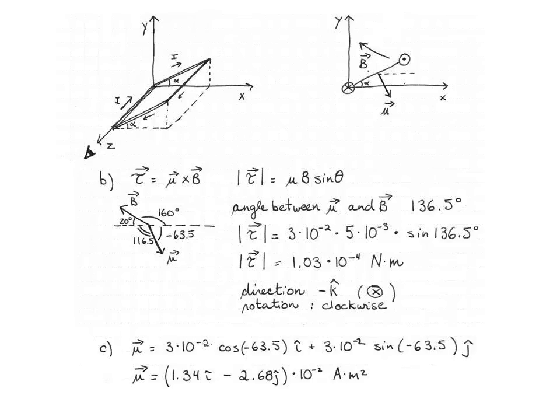To find the torque caused by the magnetic field with x, y, and z components, we need to do a cross product using the components of the magnetic moment vector. We calculate those by taking the magnitude 3 times 10 to the negative 2, multiplying by cosine of negative 63.5 degrees for the i-hat component, and sine of negative 63.5 degrees for the j-hat component. This gives 1.34i-hat minus 2.68j-hat times 10 to the negative 2 ampere·meters squared.